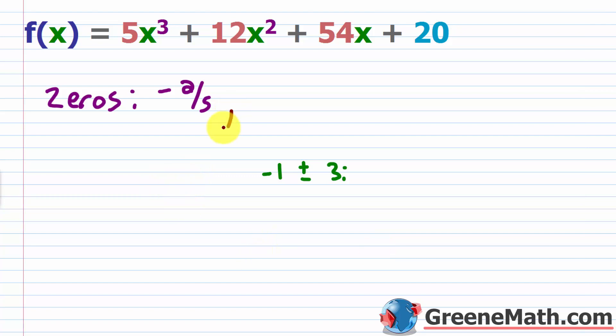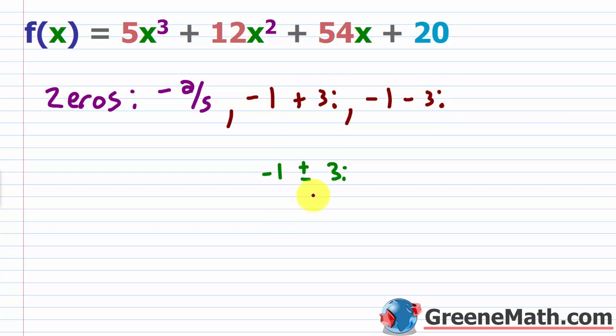So we've found our other two zeros: negative 1 plus 3i, and negative 1 minus 3i. If you want to stop the video and check these solutions by plugging them in, be my guest — but I can promise you they work. I know this was a bit tedious, but it's good to go through a harder example so that if you get something like this on a test, you know what to do.